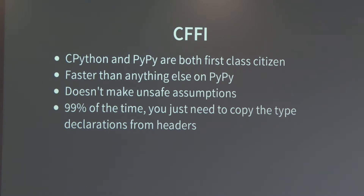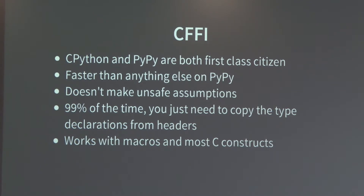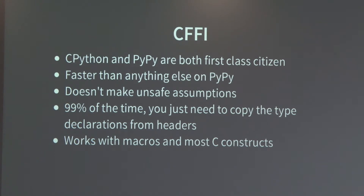It's really simple to use. Most of the time you just need to look at the man page or the header file of the function you're trying to bind to, and you usually just need to copy-paste it into your Python file — and that's it. It works with macros, which is something ctypes doesn't do. Macros just work — the ones that act like functions work, and the ones that define values like integers or strings also work. And it's just another Python library, so you don't have to learn another language.